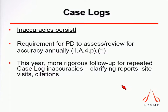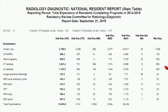Case logs are still a problem. Every time we come up here, we talk about inaccuracies. Most technical issues should have been ironed out by now. The requirement we will start to cite programs for is that the program director is supposed to assess and review for accuracy of the update. It's the program director's responsibility to review that case log data and make sure it accurately reflects what's going on in their program. This year we're having more rigorous follow-up for repeated case log inaccuracies.